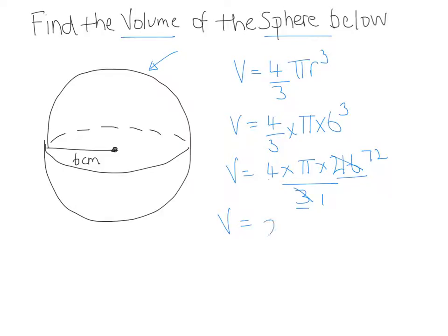Now 4 times 72 is 288. Now you could do these calculations on your calculator if you like.